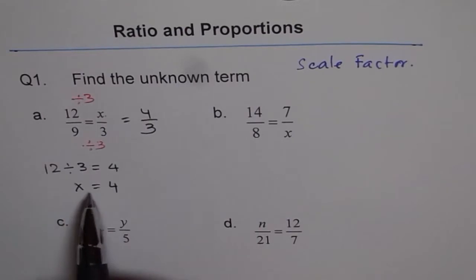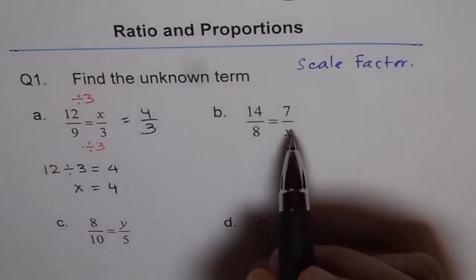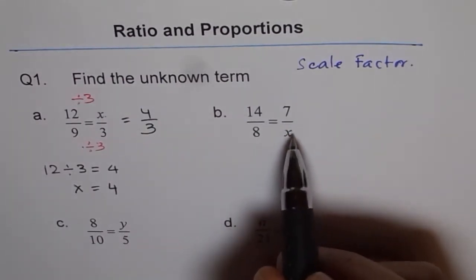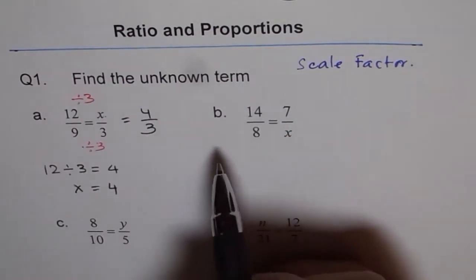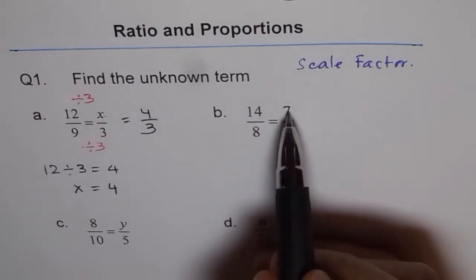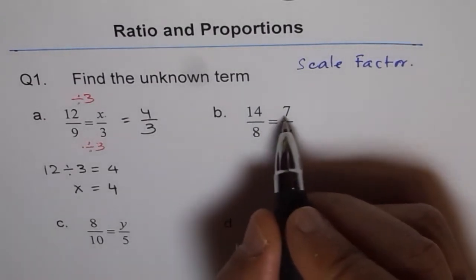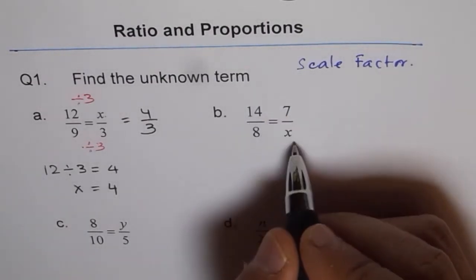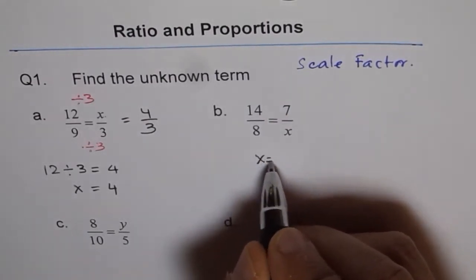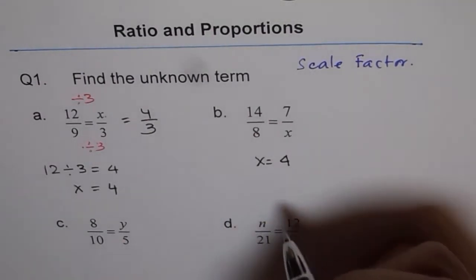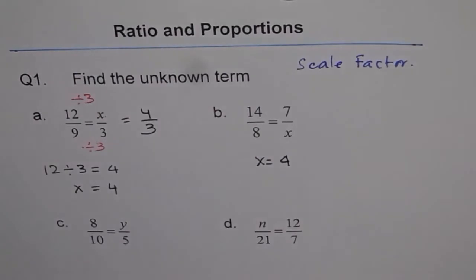Now for problem b, we'll apply the same method. We have to find x. How do we get 7 from 14? 7 is half of 14, so x should equal half of 8. Therefore x = 4. This is the scale factor method we've used to find x.